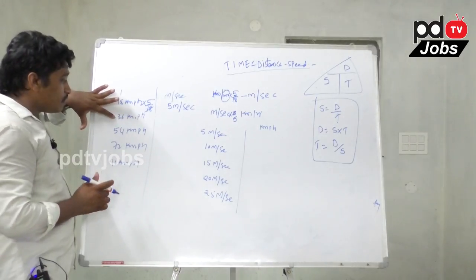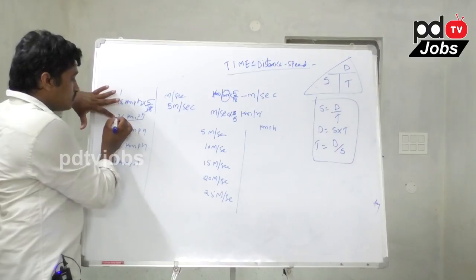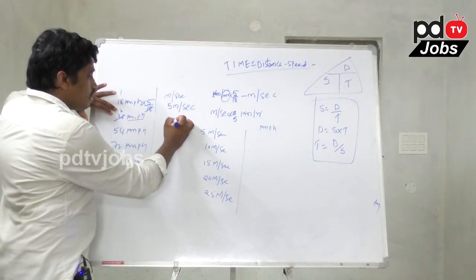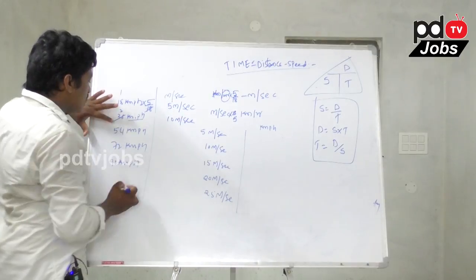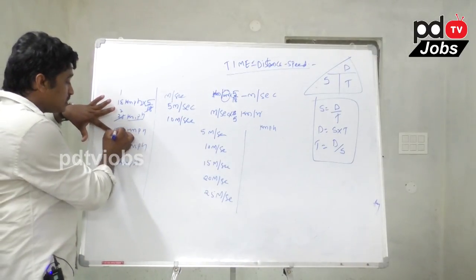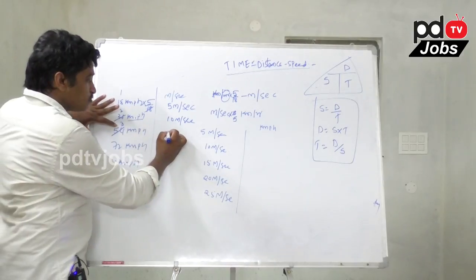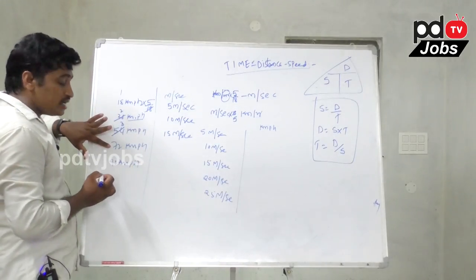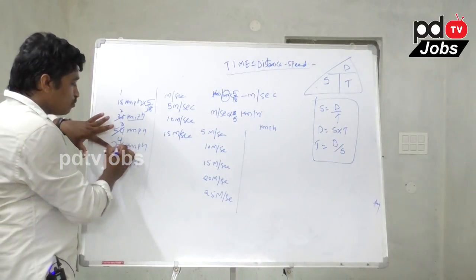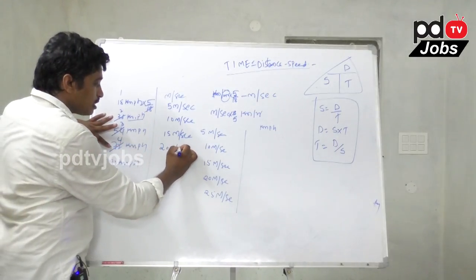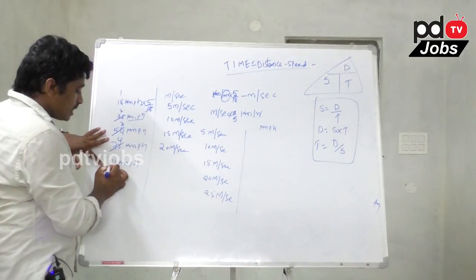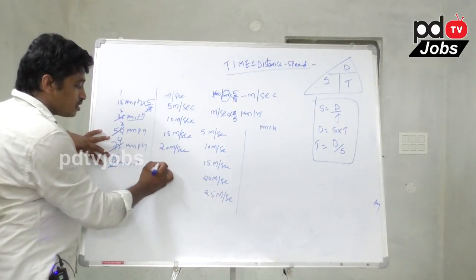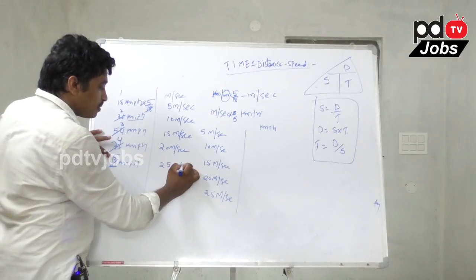54 kmph: 18 into 3 times, so 3 into 5 equals 15 meters per second. 72 kmph: 18 into 4 times, so 4 into 5 equals 20 meters per second. 90 kmph: 18 into 5 times, so 5 into 5 equals 25 meters per second.